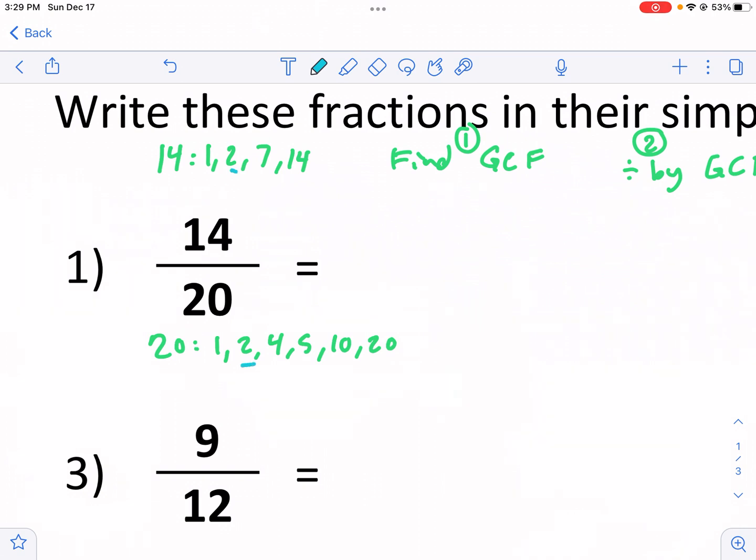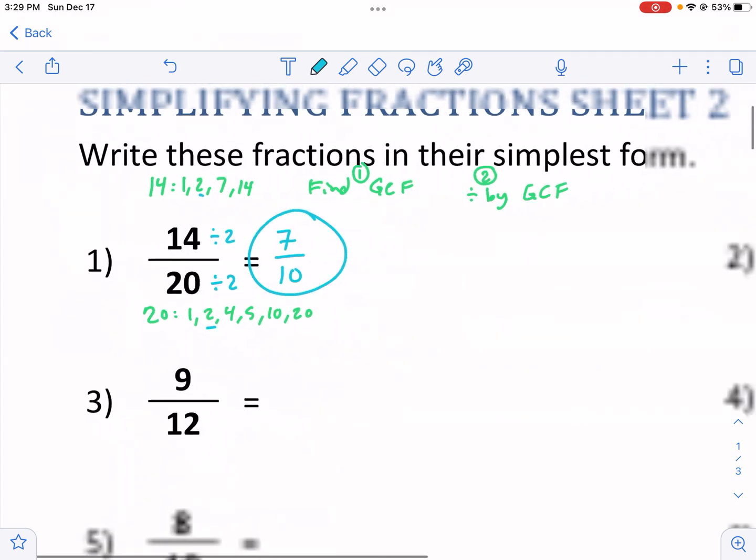So I'm going to divide the top number by two, the numerator, and the bottom number by two, the denominator, and I get 7 over 10, and that is my simplified fraction.